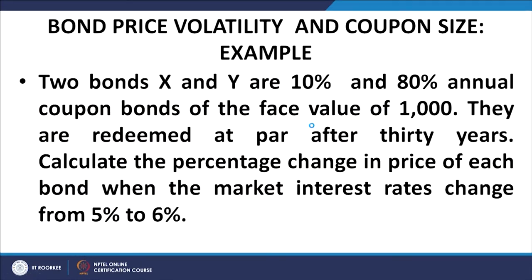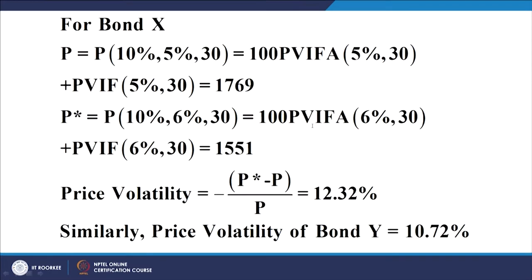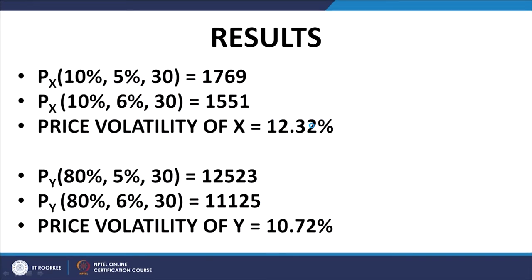These are the summarized results. An example relating to the effect of coupon size shows that as coupon size increases, price sensitivity and volatility decrease. A bond with a 10 percent coupon, 30-year life, at 5% YTM priced at 1769 and at 6% YTM priced at 1551 gives a price volatility of 12.32 percent. When the coupon rate is increased to 80 percent, the price volatility decreases to 10.72 percent.